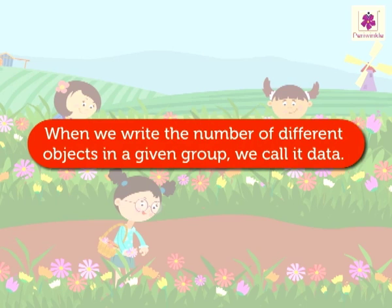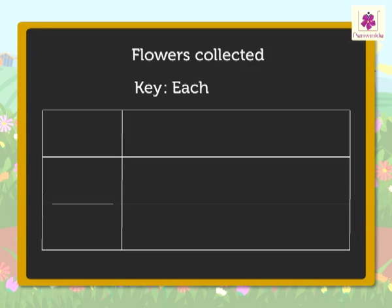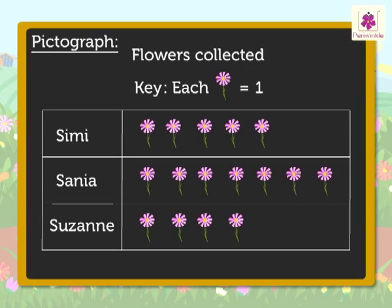When we write the number of different objects in a given group, we call it data. The data given in the flower farm example can be represented as follows. This data can also be represented by drawing pictures — it is called a pictograph. We should be able to collect information from a pictograph by reading it.